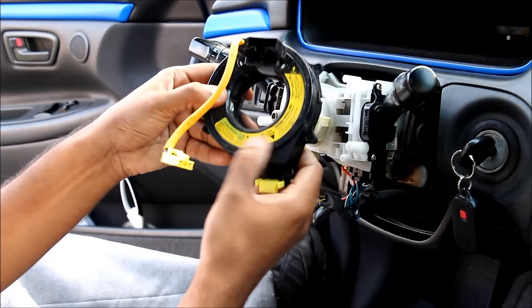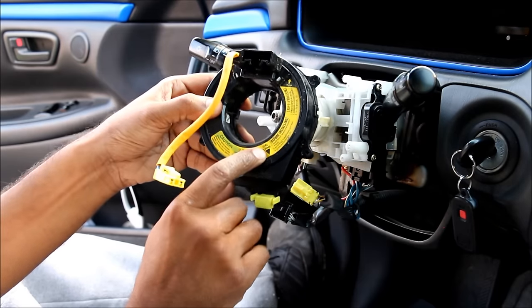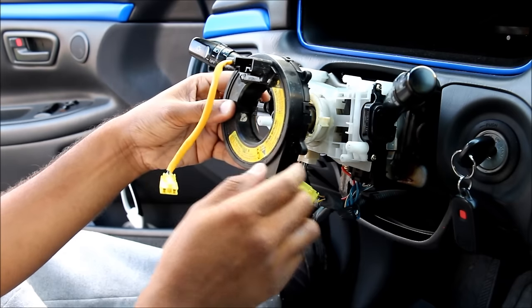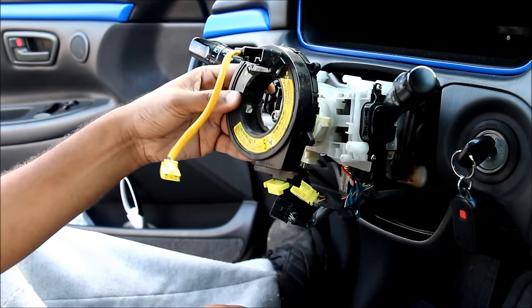When reinstalling your clock spring you want to make sure that this alignment peg is lined up here with the steering wheel straight. Otherwise when you reinstall this you could be breaking wires as you're turning the steering wheel.